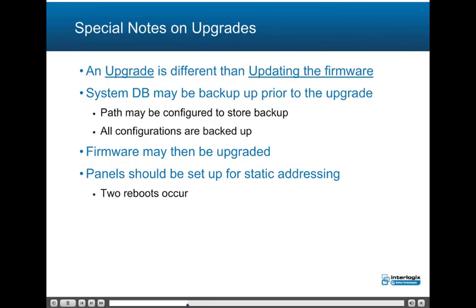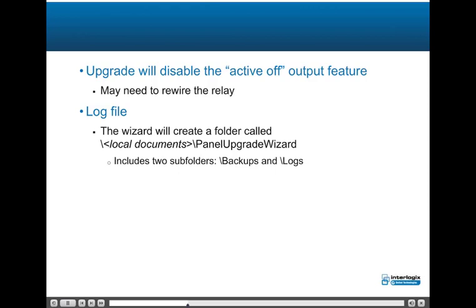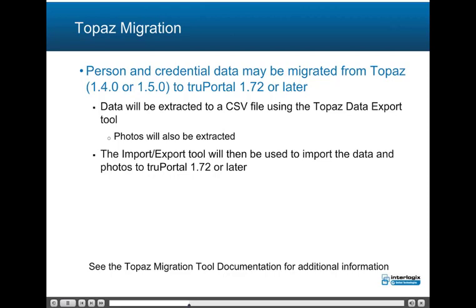For existing TruePortal 1.0 and GoEntry 3.0 customers, the upgrade will disable the Active Off Output feature, which may require rewiring certain relays. The wizard will create a folder called \local documents\panel upgrade wizard, which includes two subfolders: \backups and \logs.